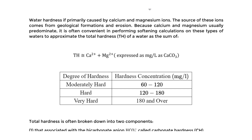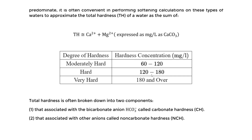We approximate the total hardness as the sum of the calcium and magnesium ions only. This is expressed in units of mg per liter as calcium carbonate. Moderately hard water is in the range of 60 to 120. Hard is 120 to 180. Very hard is 180 and over.